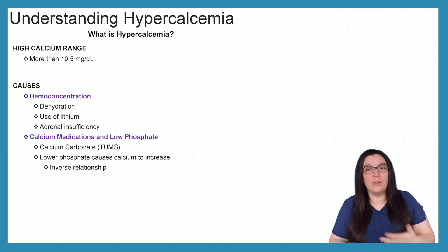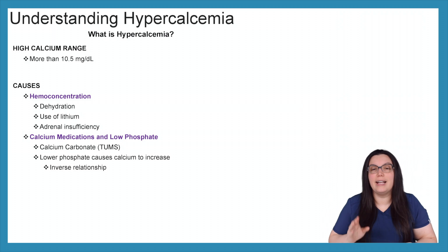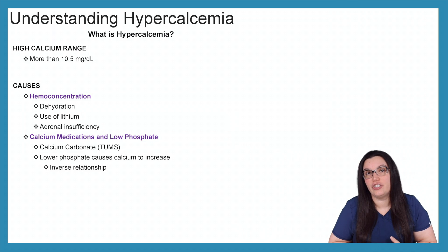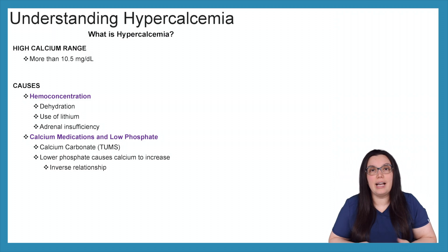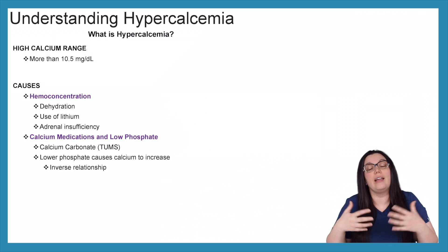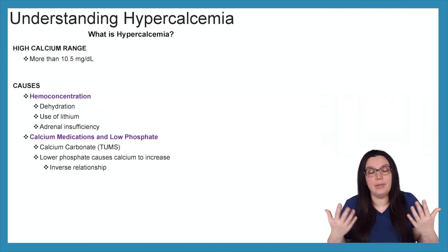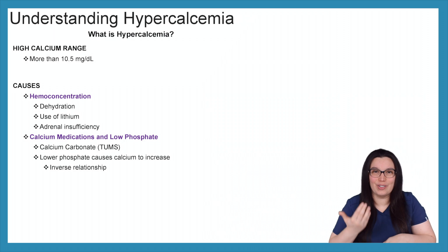Another category of hypercalcemia is hemoconcentration. So if we are dehydrated, using lithium medications, as well as adrenal insufficiency can ultimately cause hemoconcentration in our blood. And lastly, calcium medications and low phosphate — so calcium carbonate, like we see in Tums, lower phosphate causes calcium to increase and can also cause hypercalcemia. If phosphate is down, calcium is going to go up — they don't like each other, they always have that inverse relationship.